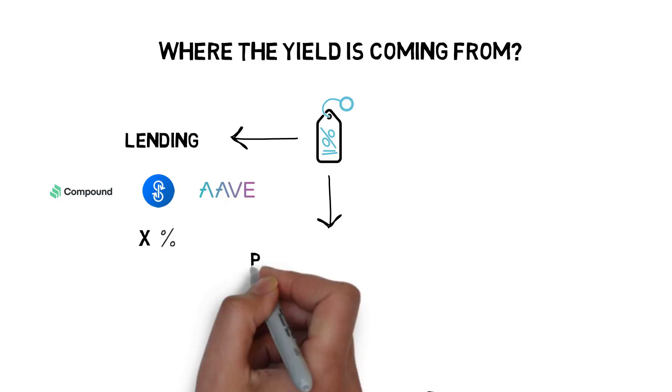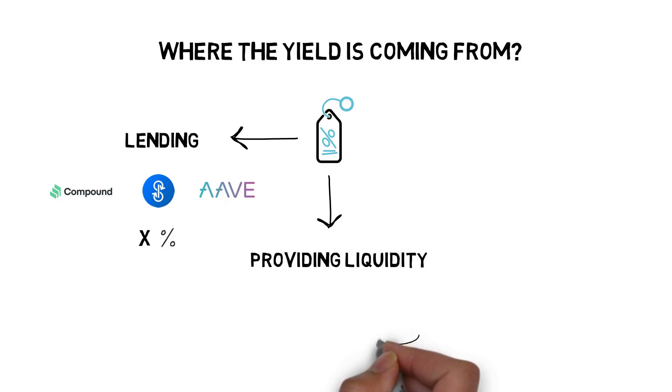The next one is providing liquidity to liquidity pools. You can supply your coins to platforms such as Uniswap, Balancer or Curve and start generating extra money by collecting fees on trades going through the pool. This usually also yields a single digit APY on your assets.